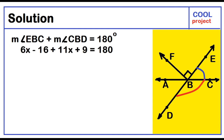The measure of angle EBC plus the measure of angle CBD equals 180 degrees. 6x minus 16 plus 11x plus 9 equals 180. Combining similar terms, 6x plus 11x is 17x. Negative 16 plus 9 is negative 7.